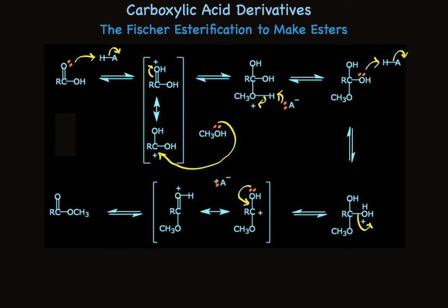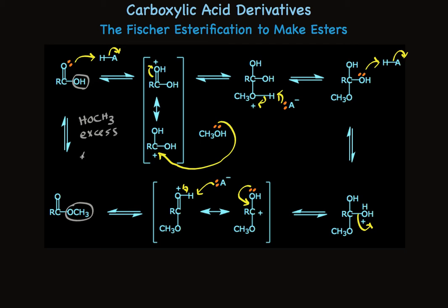The conjugate base of the acid removes a proton, the electrons stay to satisfy the positive charge, and we have formed our ester. Overall, in this equilibrium process that converts an acid to an ester, we've seen the replacement of a hydroxyl group — the carboxylic acid — by an alkoxy group, methoxy in this case, but it could be ethoxy. The conditions we use are a large excess of the alcohol, and often we also remove water using a laboratory technique. The equilibrium between the carboxylic acid and the ester can be pushed entirely toward the ester.